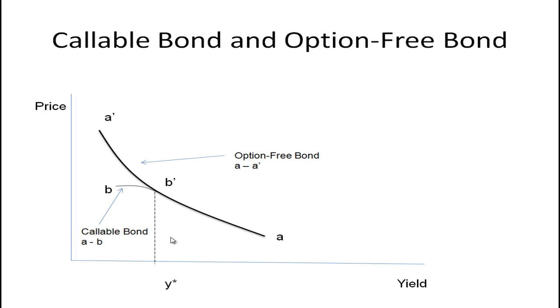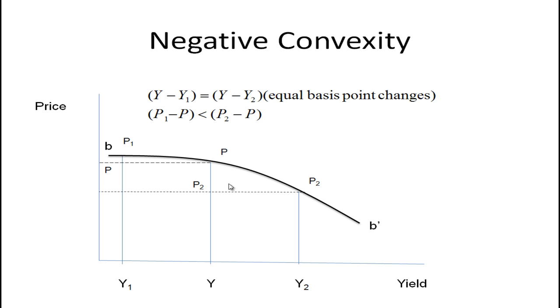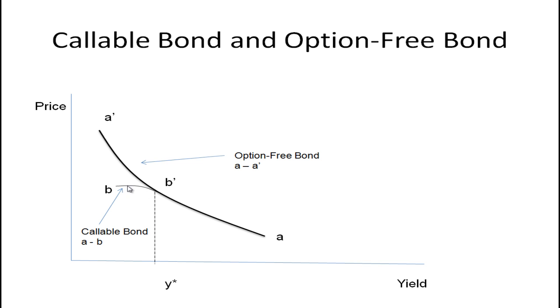So in this case, as yields fall, the bond's price doesn't keep going up as we would expect but starts to flatten out. Actually, it becomes concave here, and the reason it curves this way is because the chances are the bond is going to be called. That is, if it's a callable bond, the issuer is going to redeem it and refinance with lower interest rate bonds. So let's take a closer look at that section.